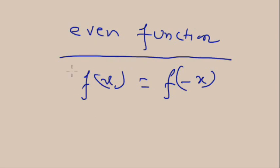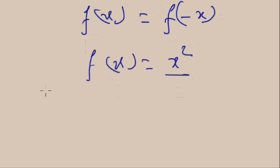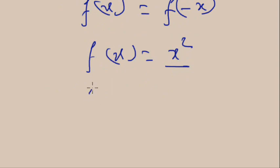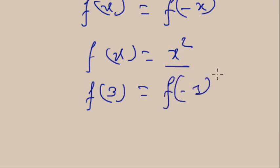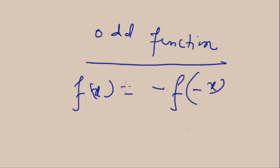An even function is when f(x) = f(−x). For example, f(x) = x². Here, f(3) = 9 and f(−3) = 9, so f(x) = f(−x). This type of function is called an even function.